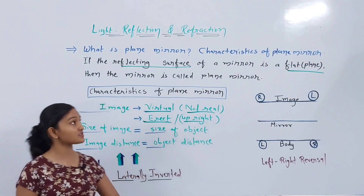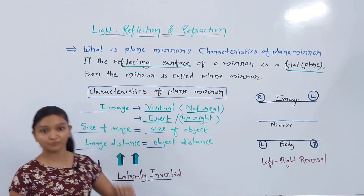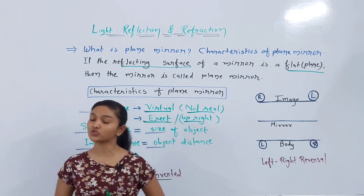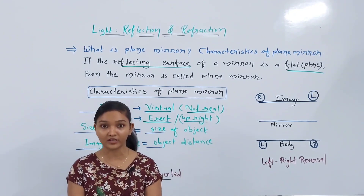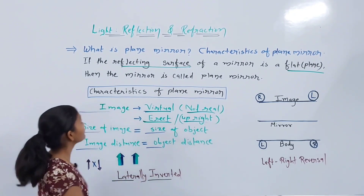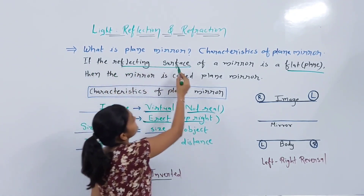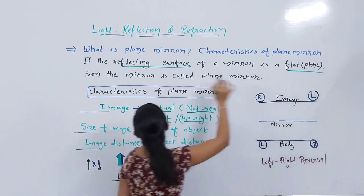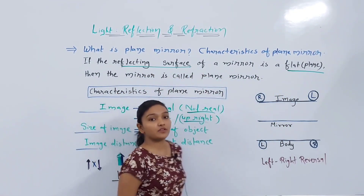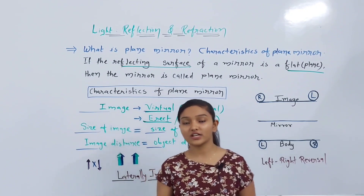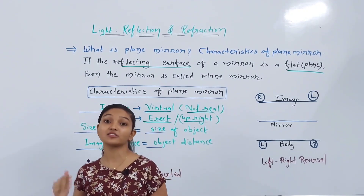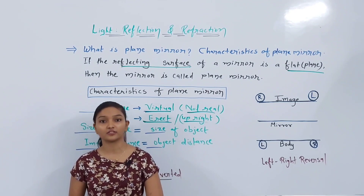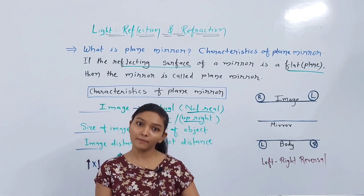What is a plain mirror? A mirror whose reflecting surface is flat or plain is called a plain mirror. If the reflecting surface where light rays reflect is flat or plain, then we call it a plain mirror.